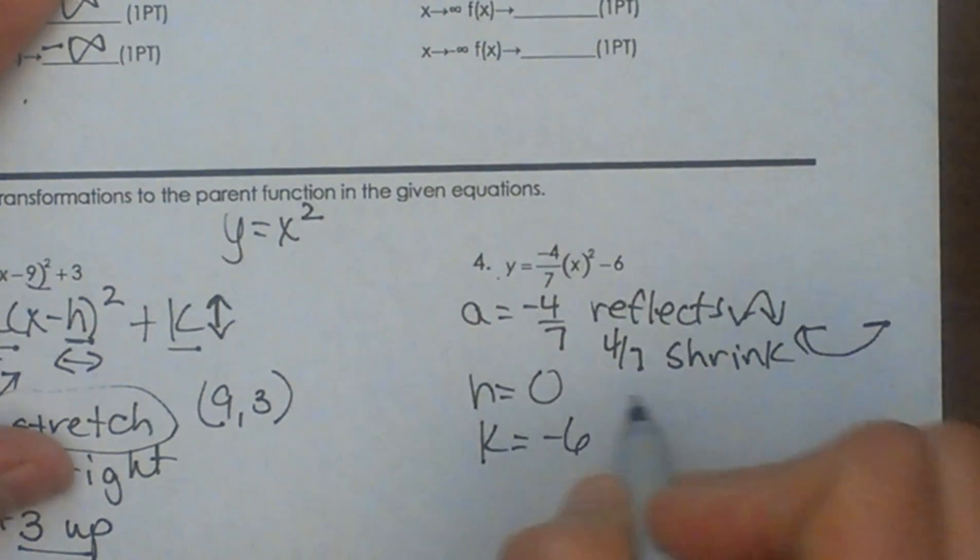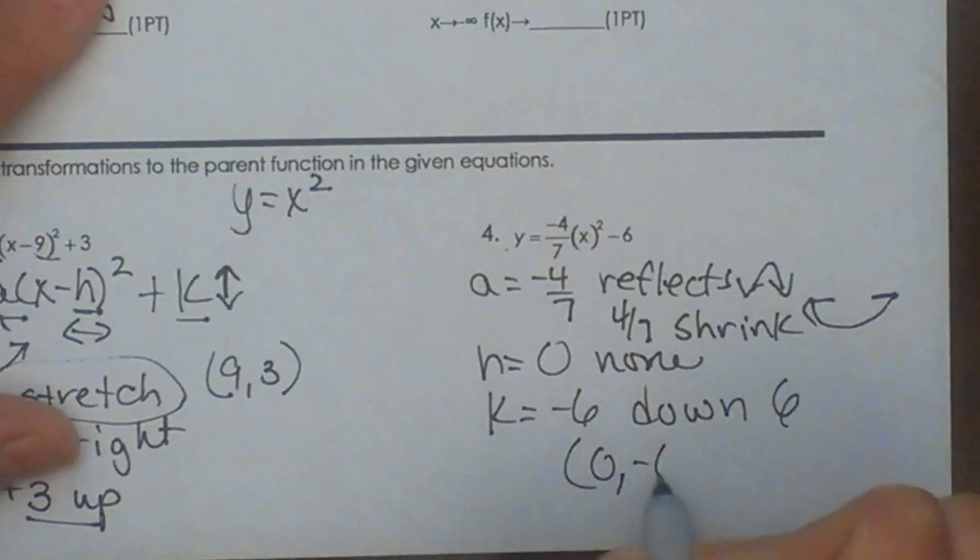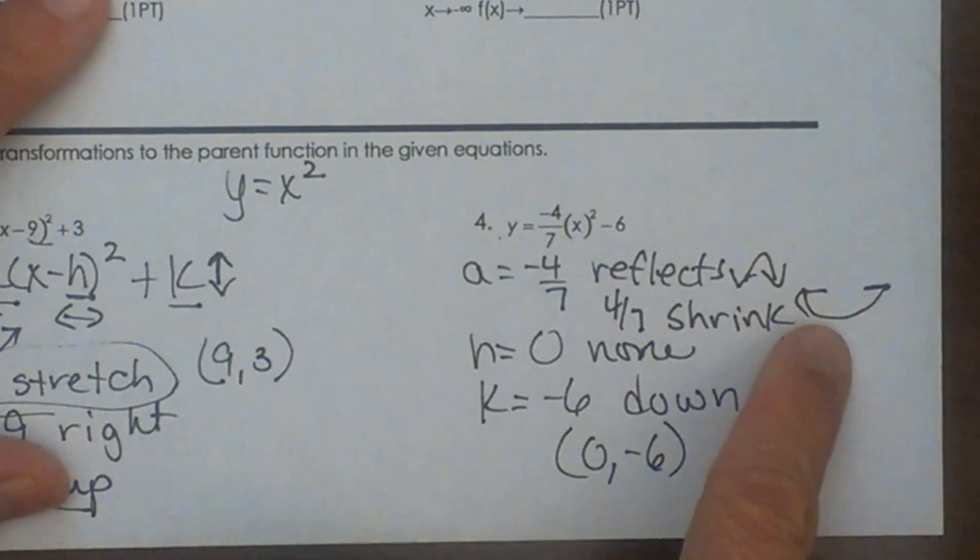The horizontal shift, there's none, so there's no horizontal shift. And then a vertical shift of negative 6, which means it's going to go down 6. So that means my vertex is at hk, which is 0, negative 6, and it's going to be facing down and kind of fat.